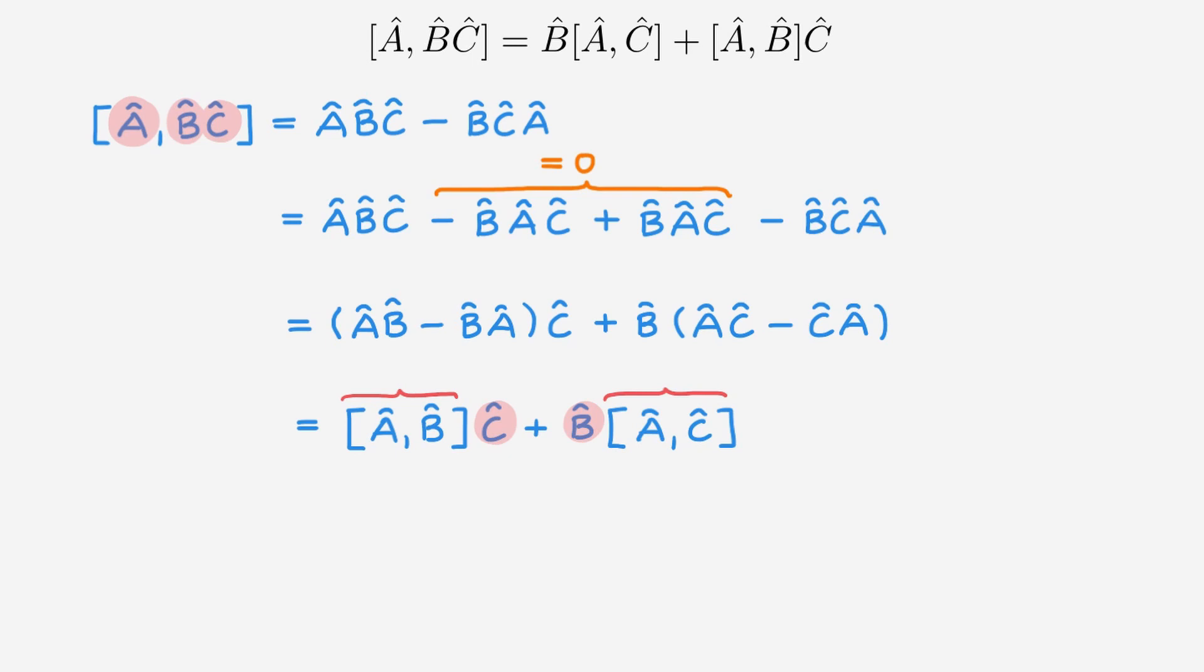A related result is that the commutator of AB with C is equal to A times the commutator of B with C plus the commutator of A with C times B. The proof follows the same line as the one we just did so I will not repeat it here but feel free to have a go yourself. And again you can remember this relation by using the same strategy we just discussed for the original relation.